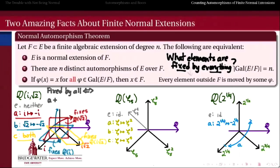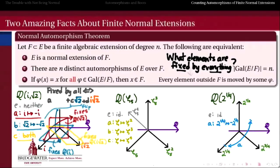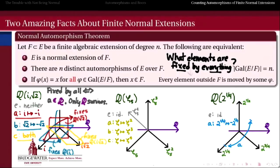A generic element of this extended field looks like a linear combination of 1, i, √2, and i√2. If we want an element fixed by everything in the automorphism group, automorphism A flips the sign on the i term, so that coefficient must be zero. Similarly, automorphism B flips the sign on the √2 term, so that coefficient must also be zero. And automorphism C flips the sign on the i√2 term, so that coefficient must be zero too. Therefore the only things that survive are numbers that were rational in the first place — the fixed field of the entire Galois group is just the base field Q.